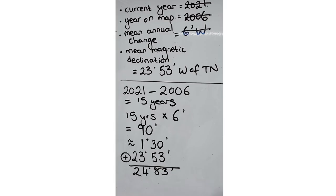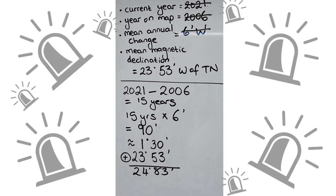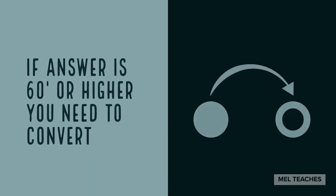You might think that we're finished, but the 83 minutes sends alarm bells going off because it is higher than 60. So again we need to convert. Ask ourselves: how many times does 60 go into 83? It goes in once, but this one needs to get added to our already existing degrees.